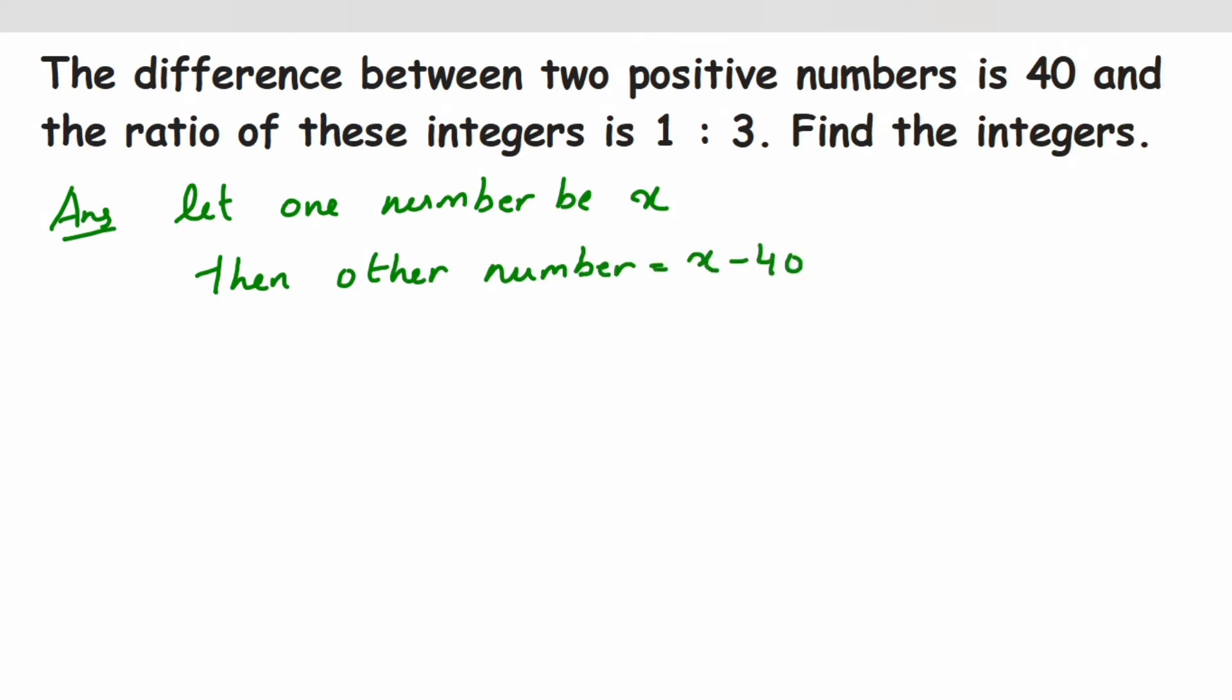Now they have given that the ratio of these integers is 1 is to 3, so from here we'll get the ratio. The number x minus 40 upon the next number x is equal to the ratio 1 is to 3. Now we're going to cross multiply them.